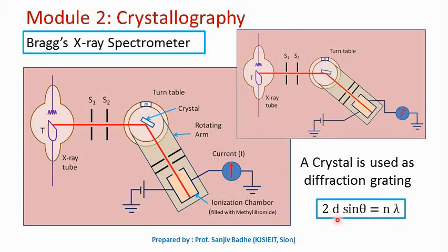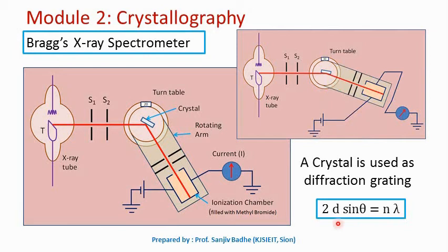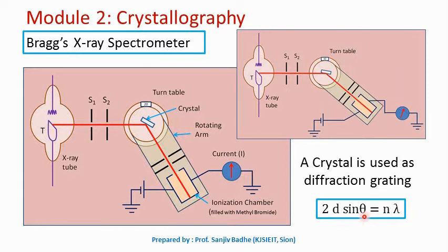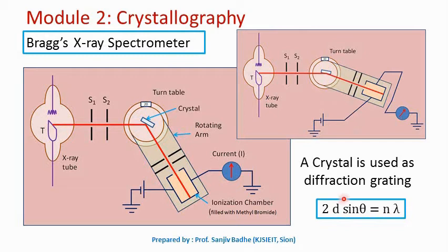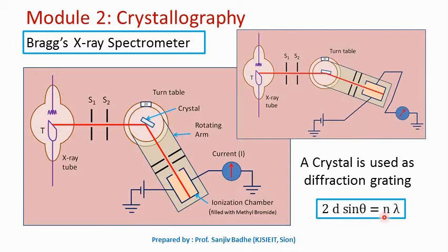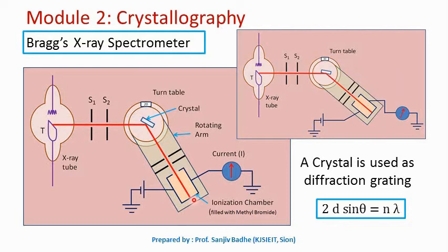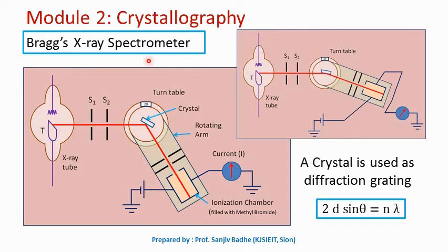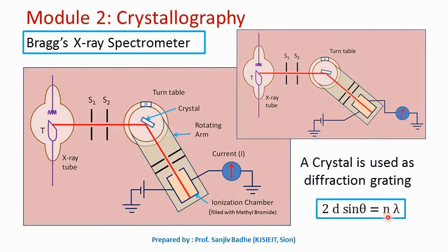Now we have the relation: 2D sin θ = nλ, called Bragg's law of X-ray diffraction. With this, we can find D if we know the angle theta for the maximum, the order of maximum, and the wavelength of X-rays used. In an experiment, we select X-rays of a particular wavelength — so wavelength is known. To find D, we need angle theta for a particular order of maximum. To find this angle, we use an apparatus called Bragg's X-ray spectrometer, which is used to find theta for a particular order of maximum, and once theta is known, D can be calculated.